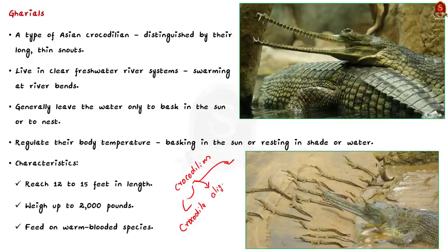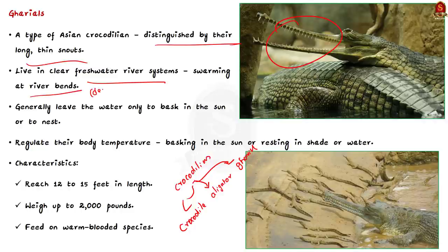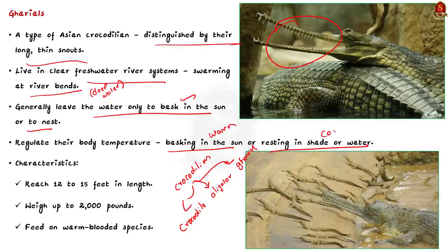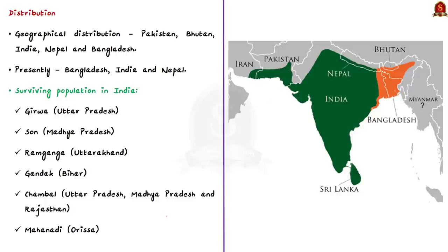Gharials, sometimes called gavials, are a type of Asian crocodilian distinguished by their long and thin snouts. They live in clear freshwater river systems, mostly found in river bends where the water is deeper. They are not well suited for land and generally leave the water only to bask in the sun or to nest, regulating their body temperature by basking to warm up or resting in shade or water to cool down. A typical gharial reaches 12 to 15 feet in length and can weigh up to 2,000 pounds. Adult gharials mainly feed on fish. Regarding distribution, the geographical range of gharial distribution has reduced throughout Punjab, Bhutan, India, Nepal, and Bangladesh. Presently, wild populations can only be found in Bangladesh, India, and Nepal. The surviving population can be found within tributaries of the Ganges river system like the Girwa, Son, Ramganga, Gandak, and Chambal rivers, with a small population also found in the Mahanadi river in Odisha.